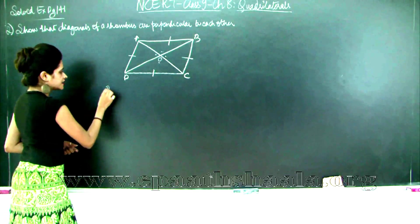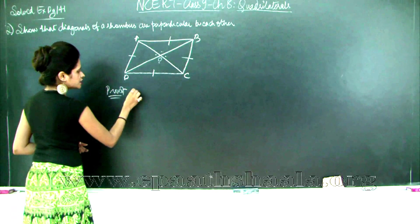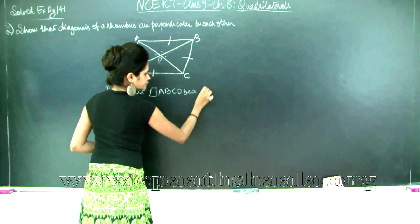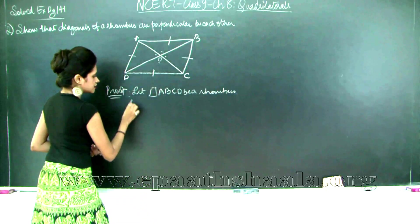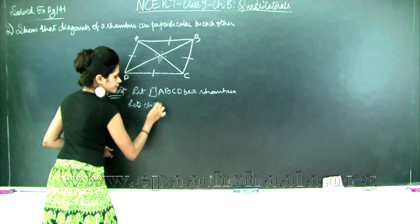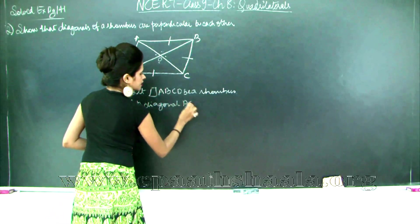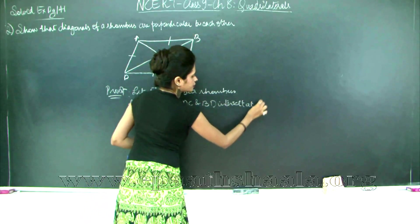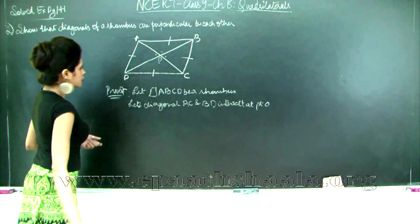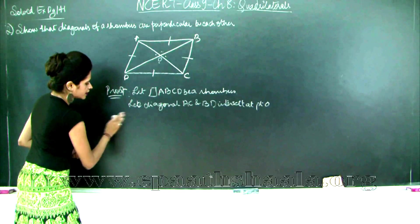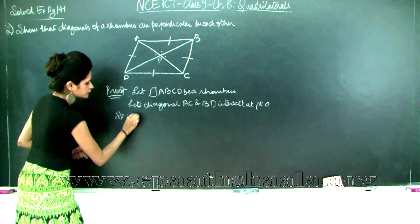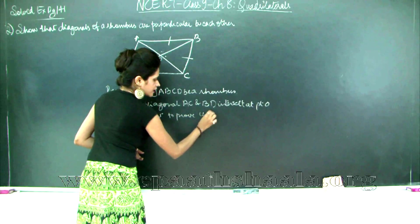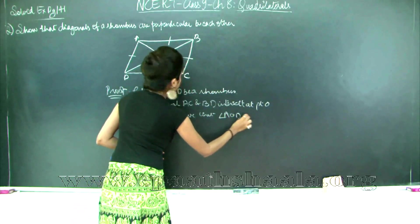Let's start writing the proof. First, we write the construction: let quadrilateral ABCD be a rhombus, and let diagonals AC and BD intersect at point O. We need to prove — or it is sufficient to prove — that angle AOD is equal to 90 degrees.